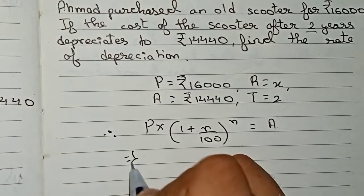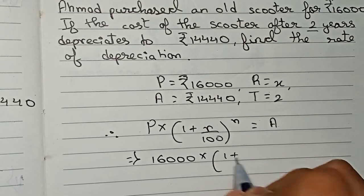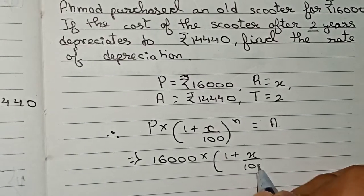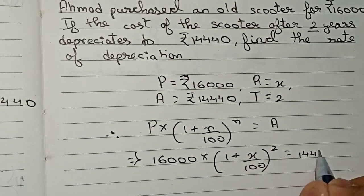Now put down the values. Principal is 16,000 times (1 plus x/100) to the power 2 equals the amount, that is 14,440.